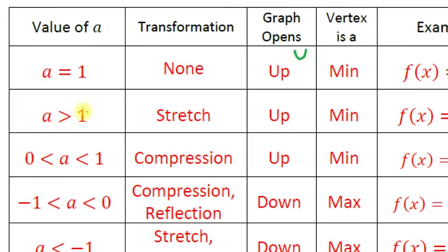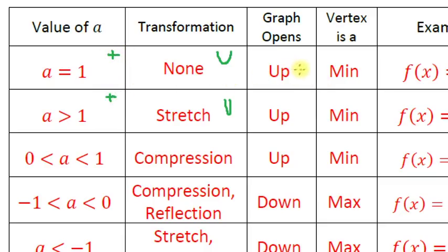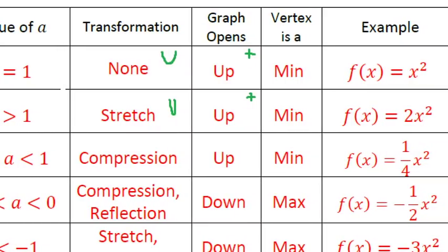What if a is greater than 1? As a gets big, the parabola gets stretched — it gets thinner or pulled up. The graph still opens up because a is positive, so the vertex is a minimum. An example is f(x) = 2x²: our a value is greater than one, so this parabola faces up and is stretched.